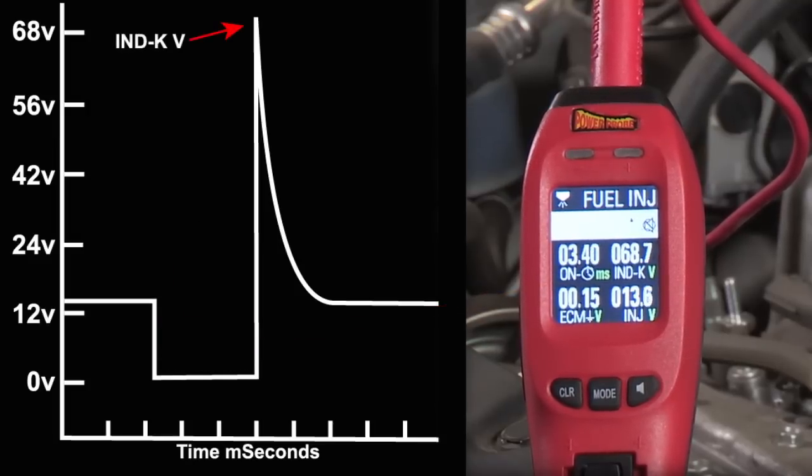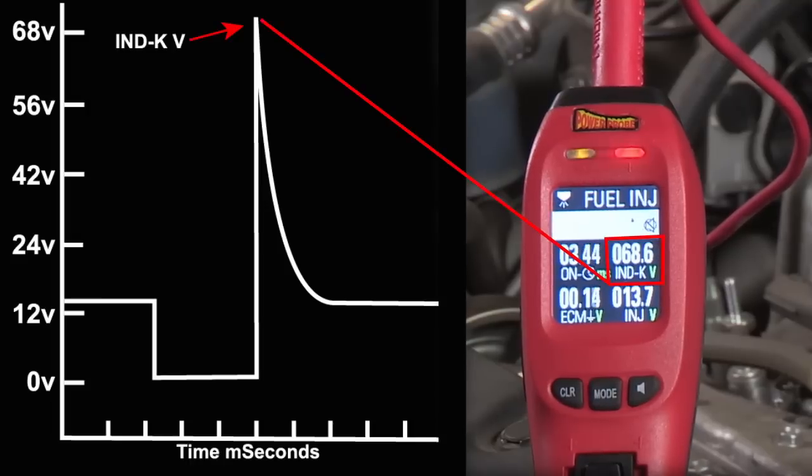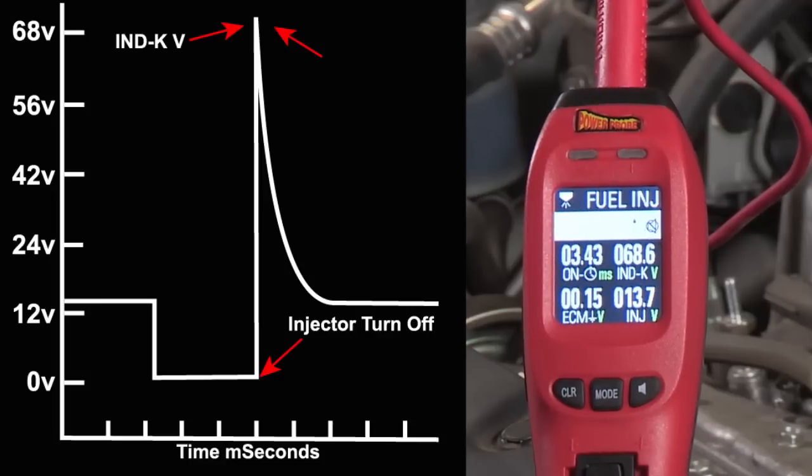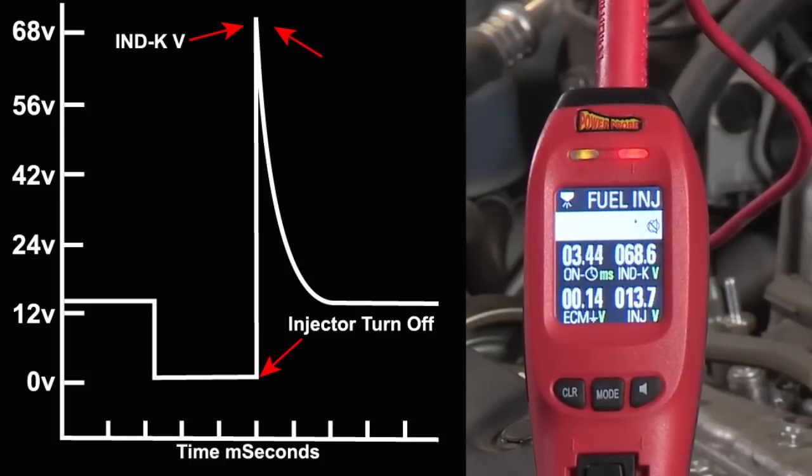Two, inductive kick voltage. When the windings in the injector coil are turned off, it produces an inductive kick or flyback voltage. The normal inductive kick ranges between 55 and 90 volts.